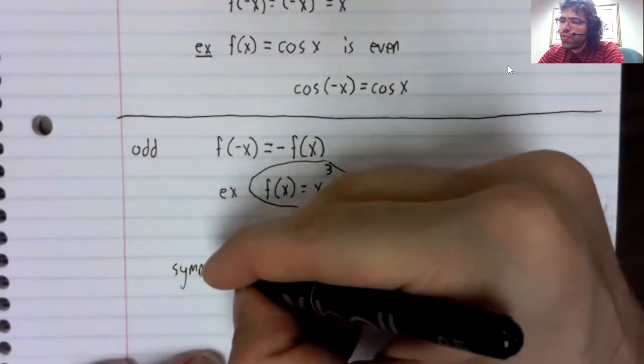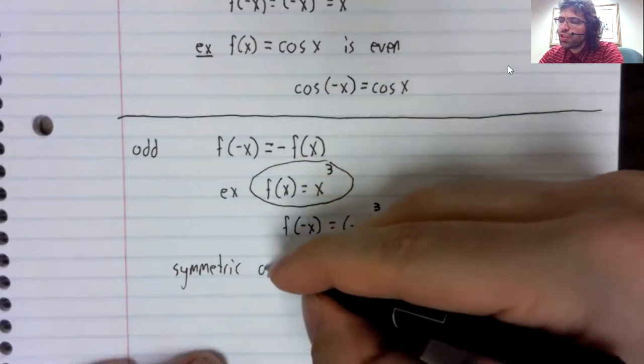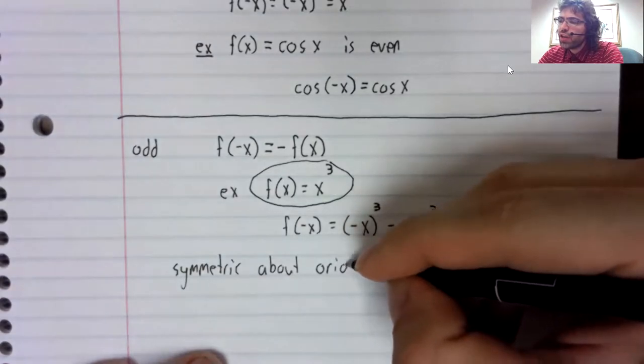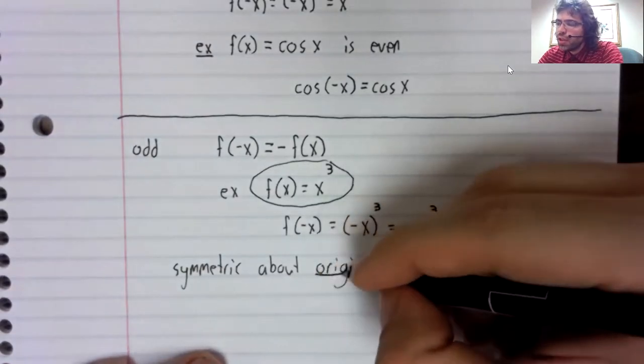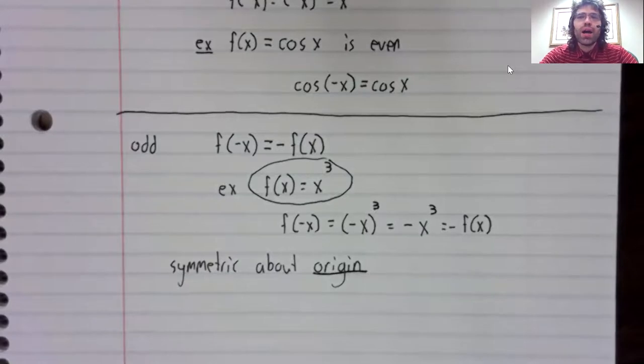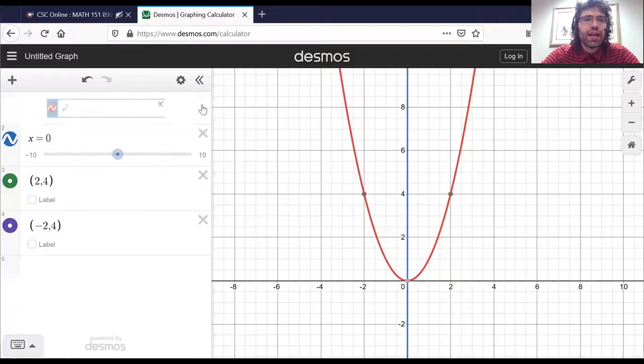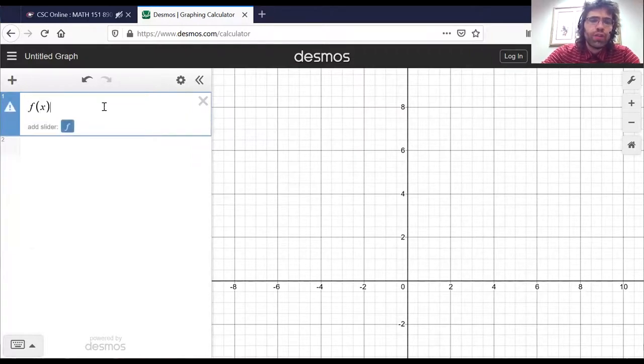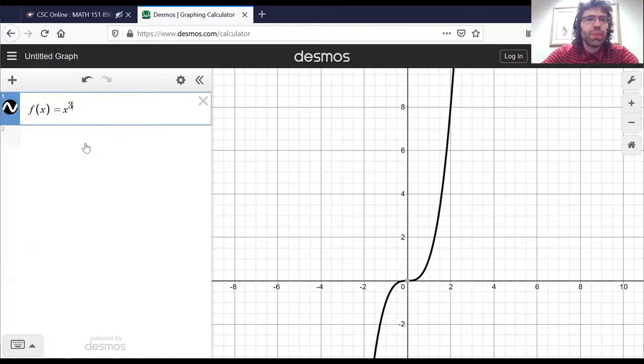Odd functions have symmetry, just like even functions do. You might think that if even functions are symmetric around the y-axis, odd functions will be symmetric around the x-axis. That is incorrect. Odd functions are said to be symmetric over the origin.